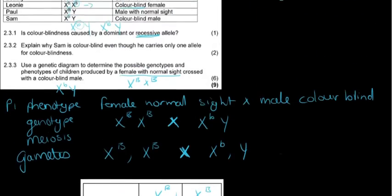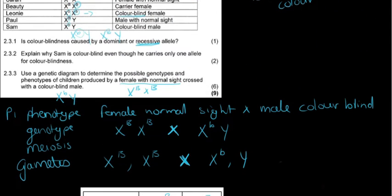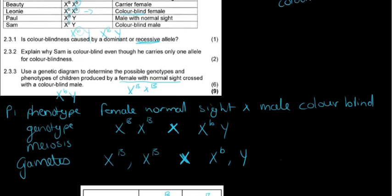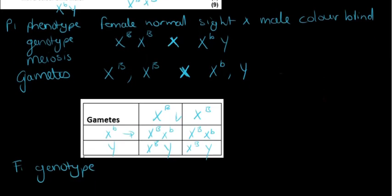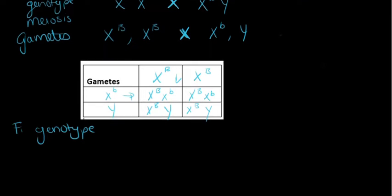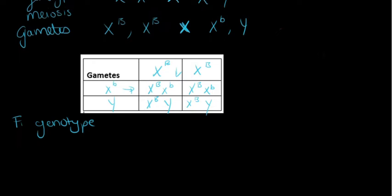Let's just quickly read the question and see what they want to know again. Use a genetic diagram to determine the possible genotypes and phenotypes of children produced. So they don't want ratios or percentages, they just want to know the genotypes and the phenotypes. So there will be two females and both those females will have normal vision but they will be a carrier for that recessive gene of being color blind. And then there'll be two males and these males will both have normal vision.